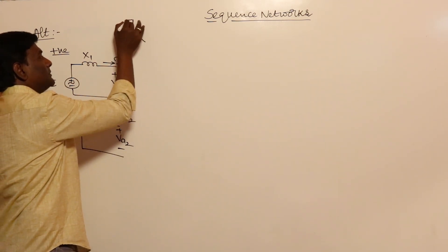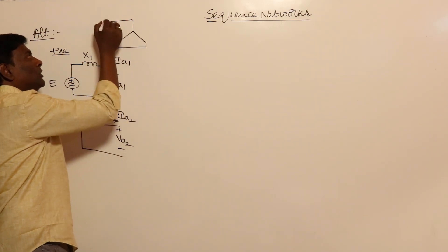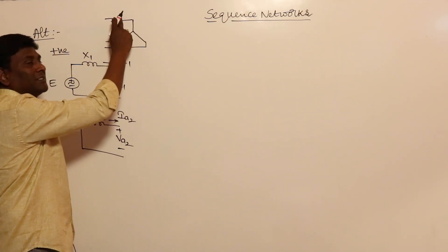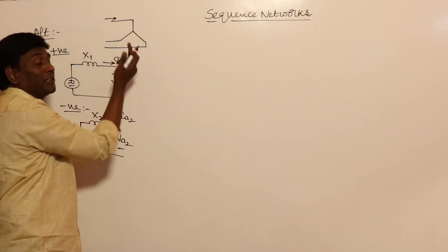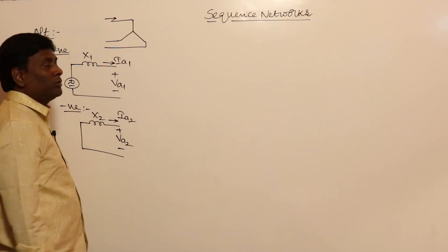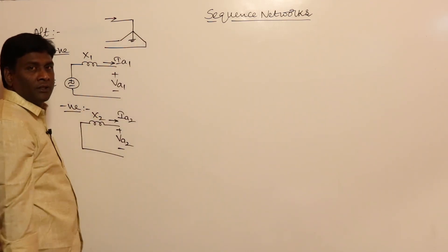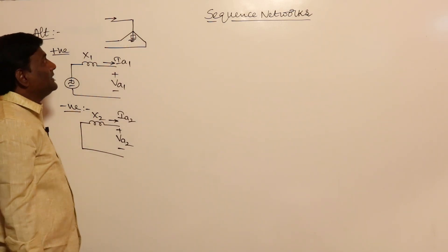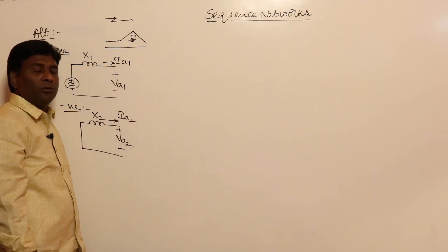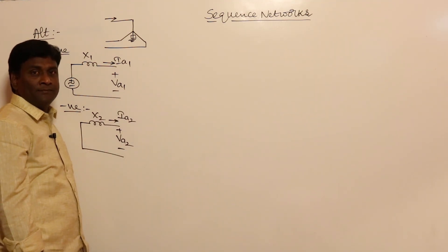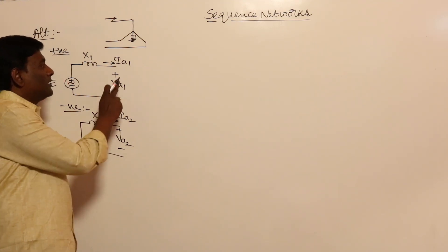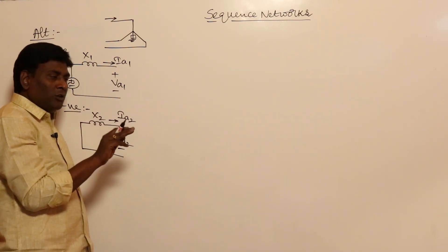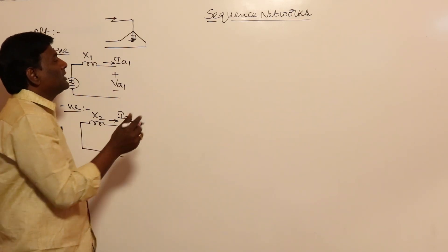Now for zero sequence — a quick recap: if a machine is star connected without grounding, zero sequence currents cannot flow. Zero sequence currents are equal in all three phases; if 1 ampere flows in each, 3 amperes enter with no return path. However, if the neutral is connected to ground, zero sequence currents can flow. If grounded through a reactance, three times Ia0 will flow, so the voltage across it is 3·Ia0·Z.